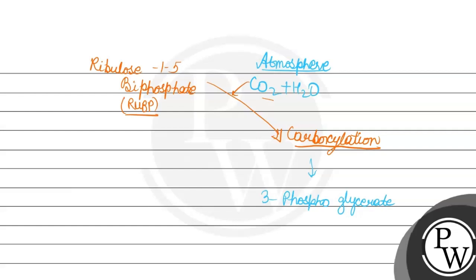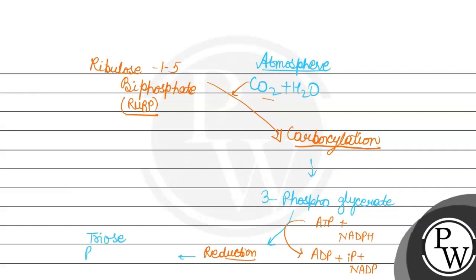अब इस 3-phosphoglycerate का reduction होगा। यह reduction process में 2 molecules ATP के और 2 molecules NADPH के इस्तेमाल होते हैं — phosphorylation और reduction करने के लिए एक CO2 molecule का। ये ADP, inorganic phosphate, और NADP+ बना लेते हैं। Reduction के बाद triose phosphate बन जाता है।